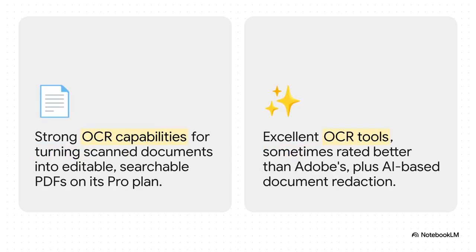Next up is Optical Character Recognition, or OCR — the magic that turns flat scanned documents into searchable, editable PDFs. Both tools have excellent OCR, but a lot of reviewers find that Foxit is sometimes even more accurate at recognizing text. Foxit also adds a really powerful tool that Adobe doesn't have natively: AI-based redaction. It automatically finds and removes sensitive info like names or social security numbers. For legal and compliance work, that feature alone can be a total game changer.